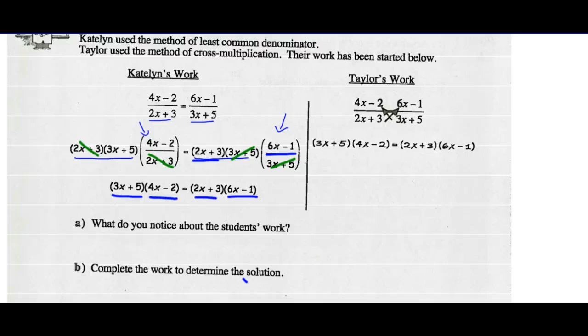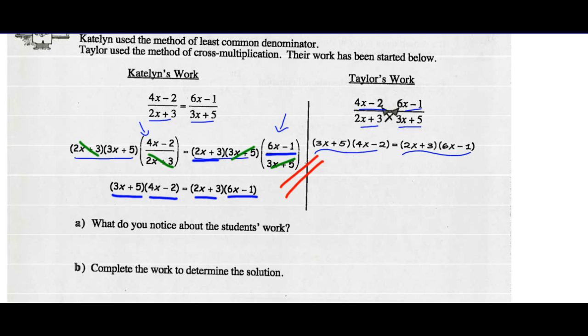Taylor used the method of cross-multiplying. When he cross-multiplies, he gets 3x plus 5 times 4x minus 2 equals 2x plus 3 times 6x minus 1. What do we notice about each student's work? We notice these are the same result — it doesn't matter which method we use, we're going to get to the same place. Complete the work to determine the solution.